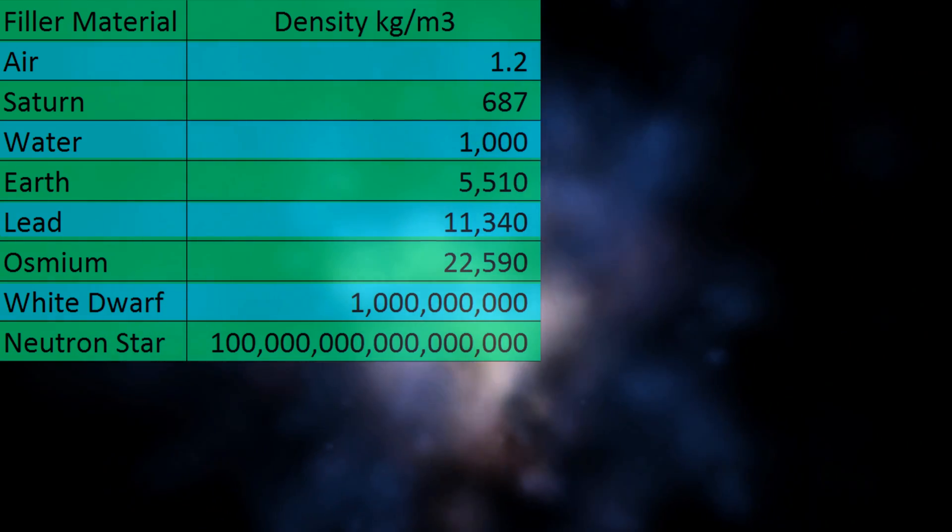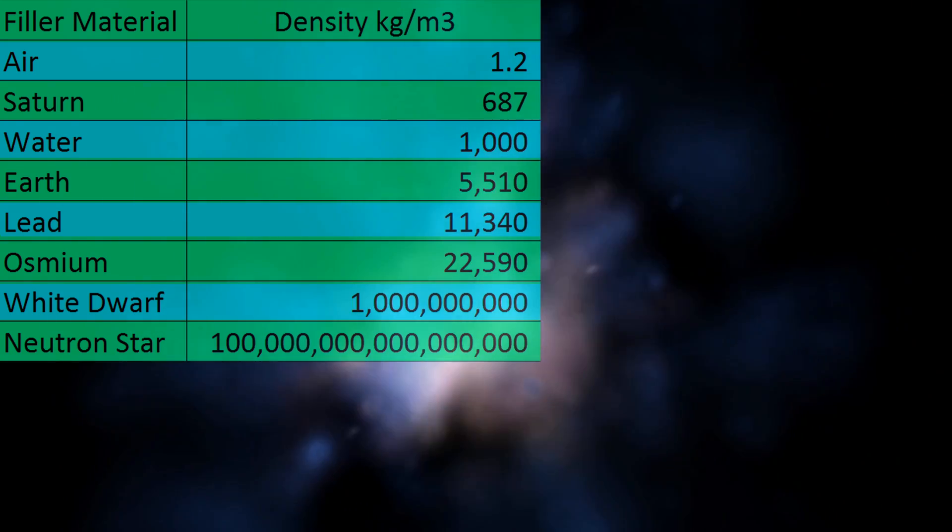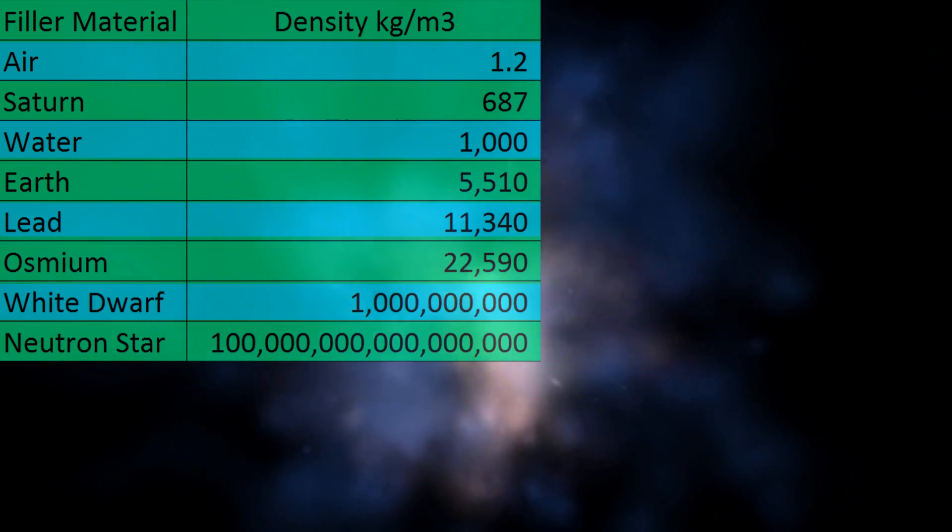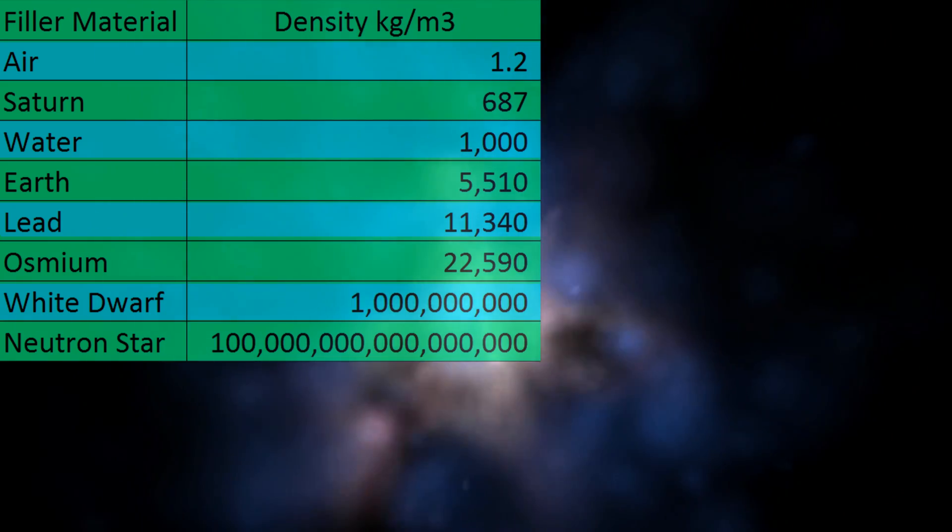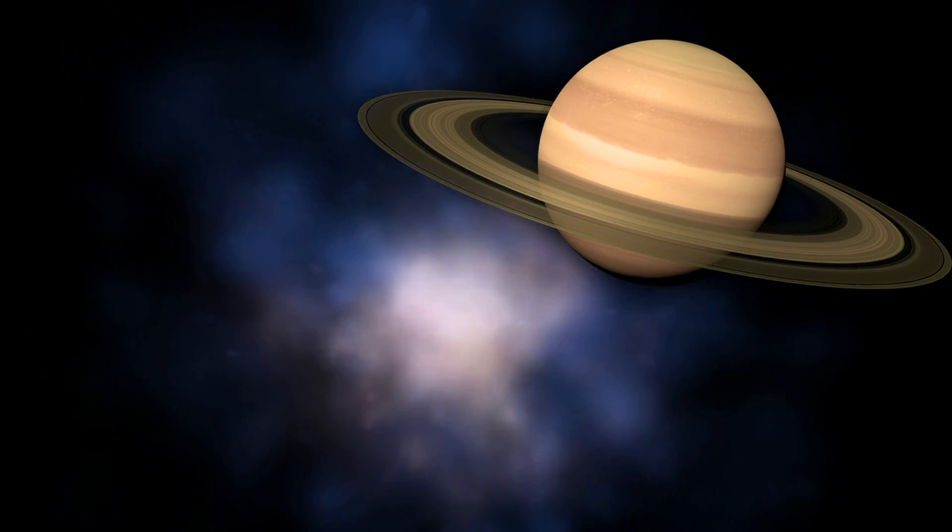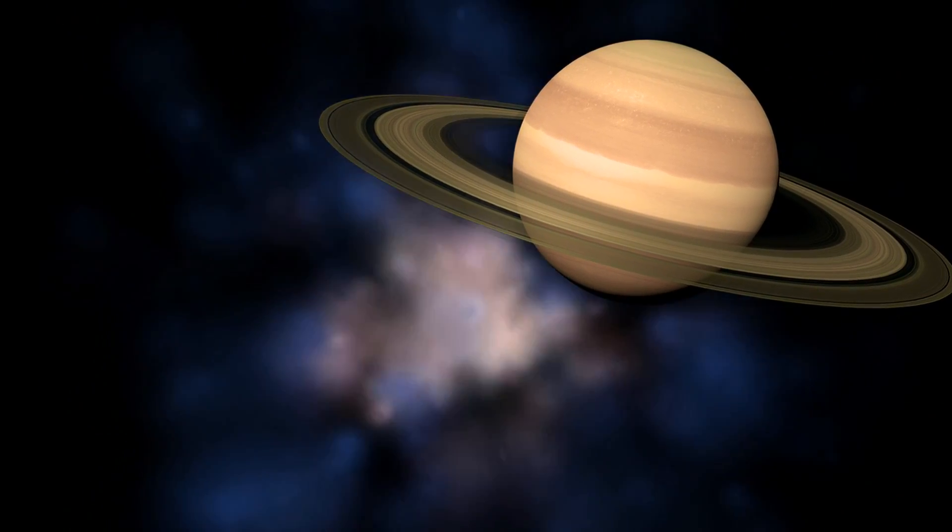The other aspect is that regardless of how big or small you build one of these things, you use the same amount of mass per square foot, one megaton. Whether your shell world is a few dozen miles across or as big as Saturn, your living area costs you one million tons of matter per square foot.